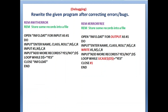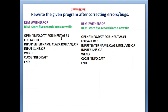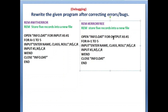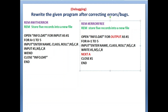Next program: 'Store five records into a file.' Again, 'store' means OUTPUT mode. Since it's five records, we use a FOR loop. We take input and use WRITE #1 to store data — hashtag 1 represents info.dat. Errors corrected: mode changed to OUTPUT, NEXT A used instead of WEND, and CLOSE #1 instead of the file name. There are three errors in this program.